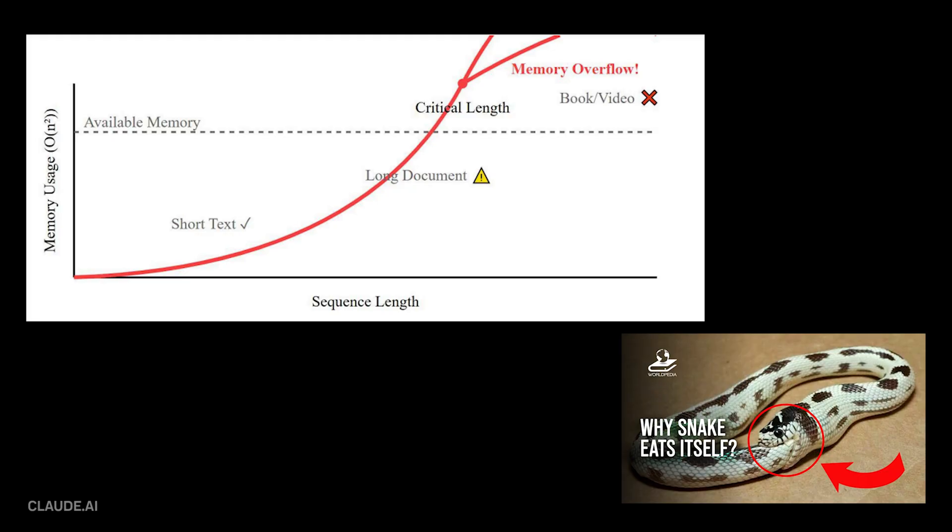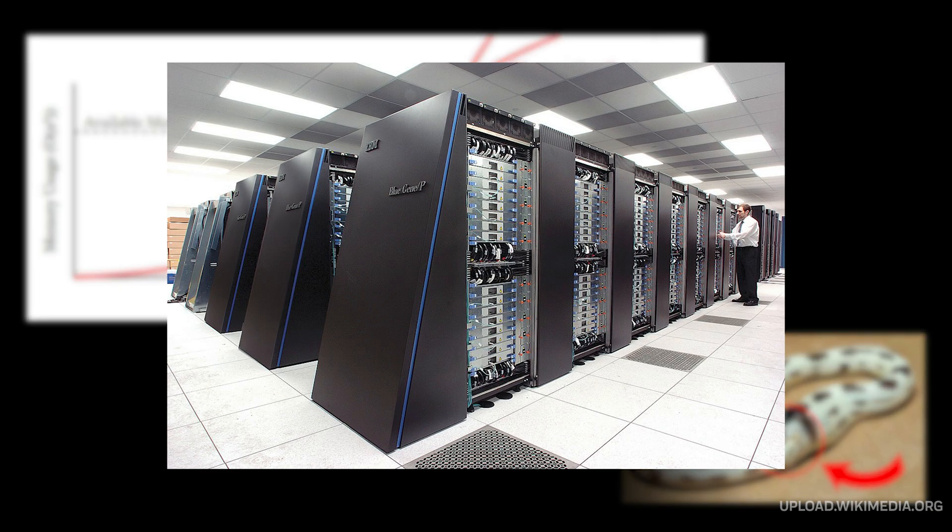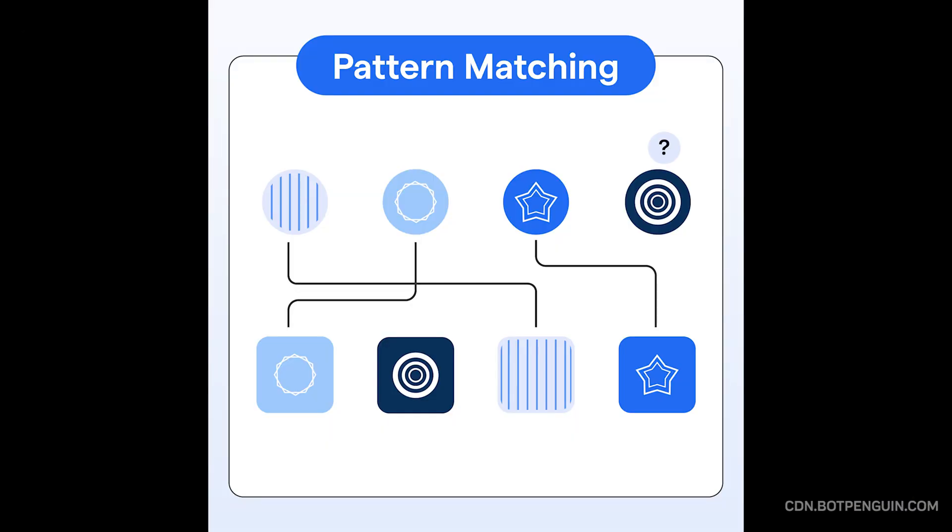Despite their power, transformers have limitations. They struggle with very long sequences, can be computationally expensive, and like all AI models, they can only work with patterns they've seen in their training data.